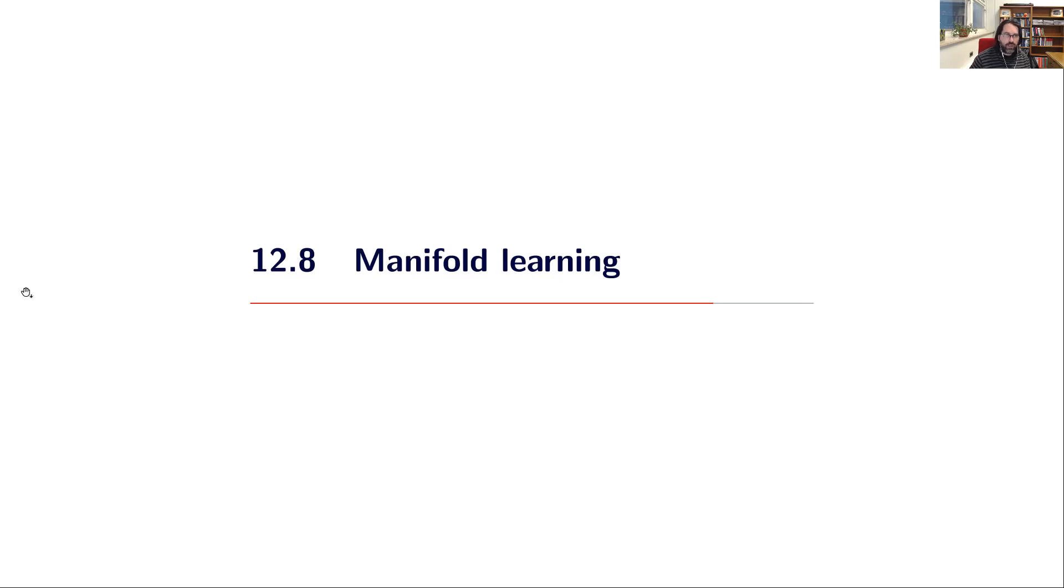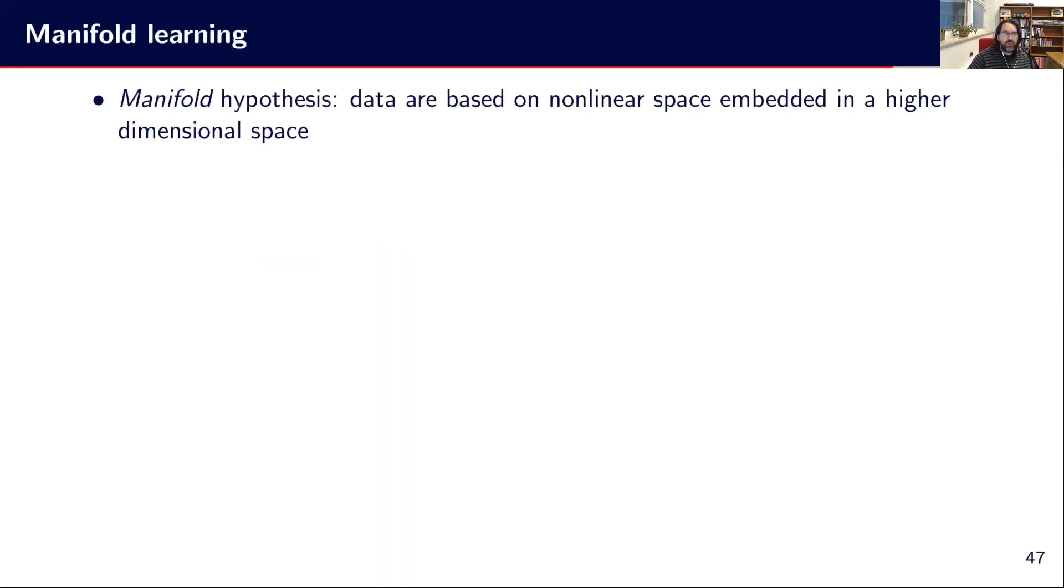So now let's talk about manifold learning. When we talk about manifold learning, we are dealing with what we call the manifold hypothesis. It's the idea that in a given high dimensionality space, in fact, the data are based on some lower dimensionality manifold. So this is some kind of subspace that is put in that high dimensionality space, but the structure is of a lower dimensionality.